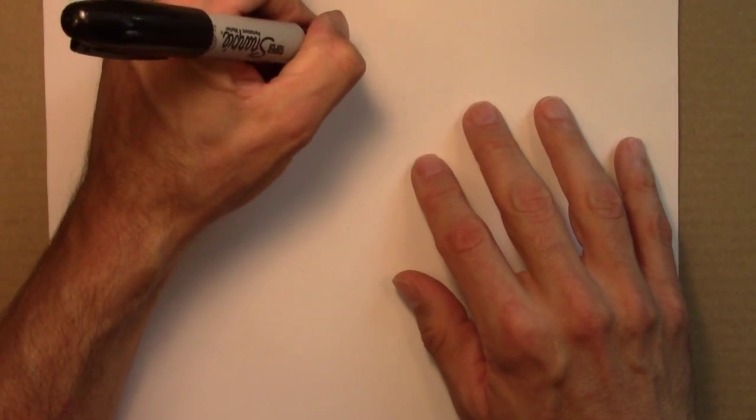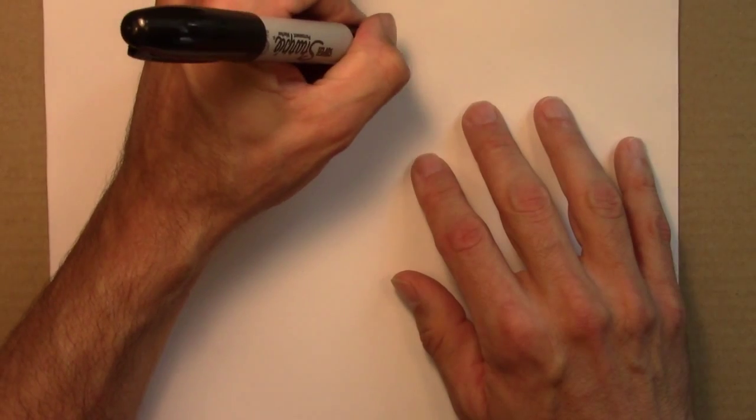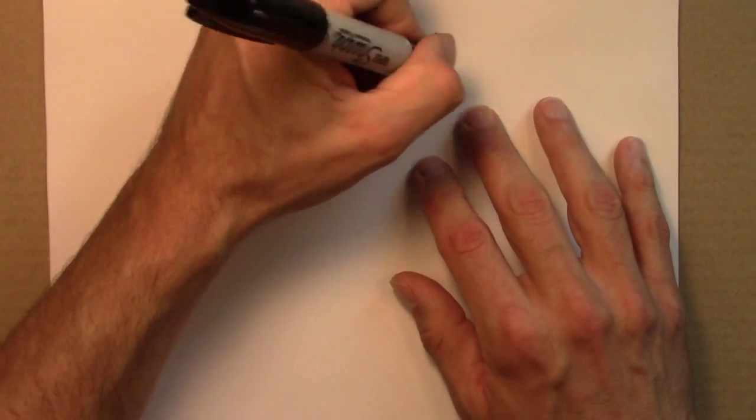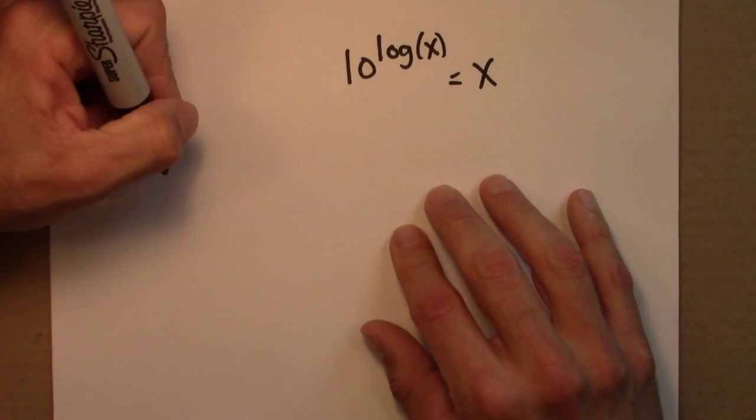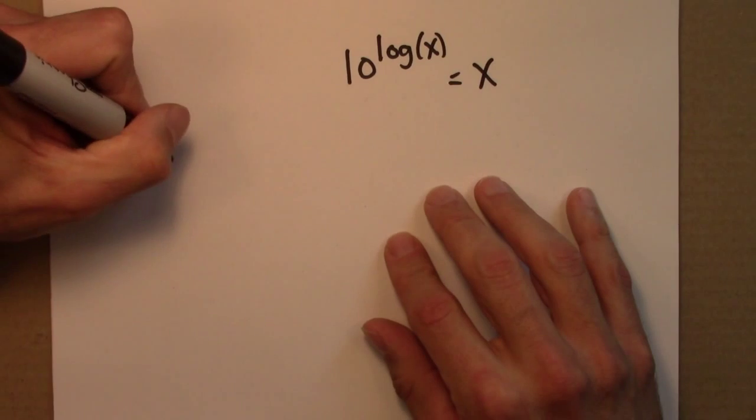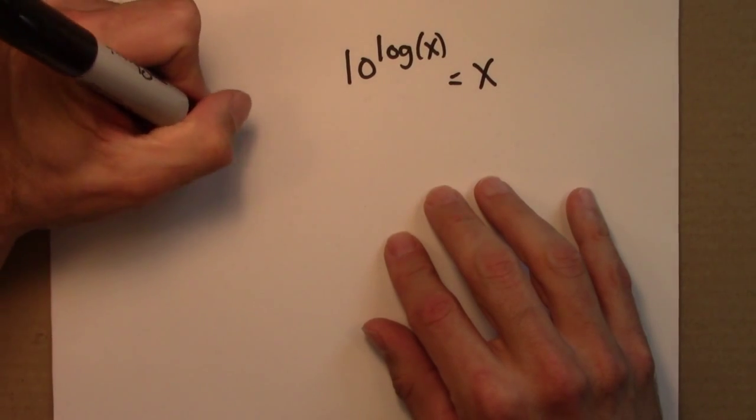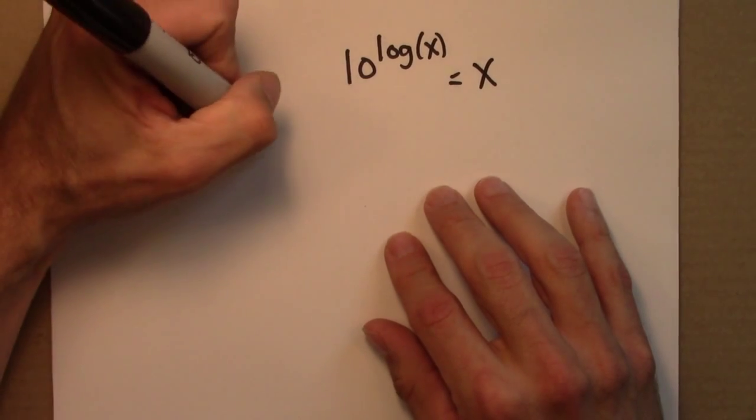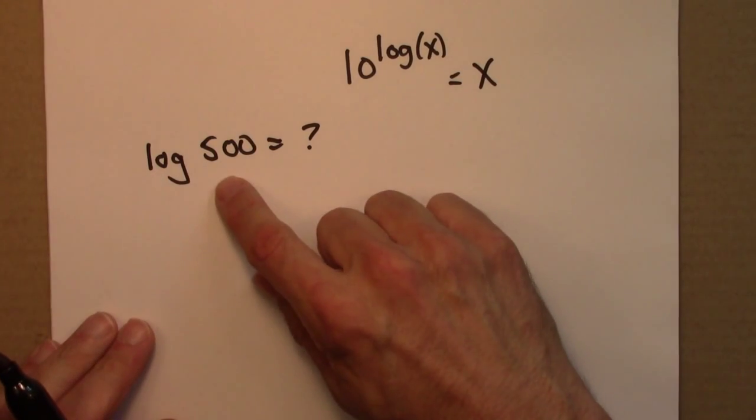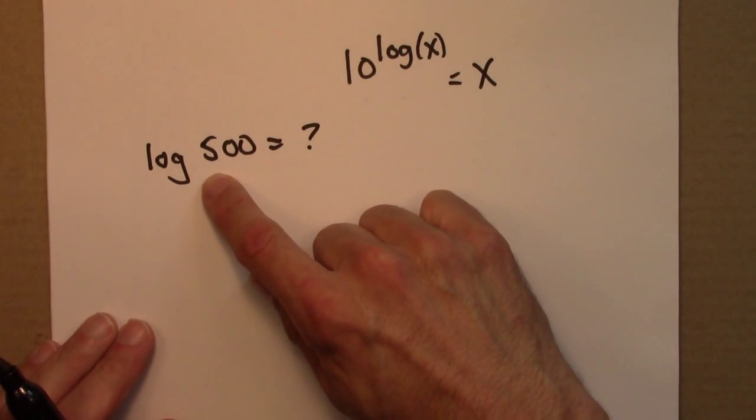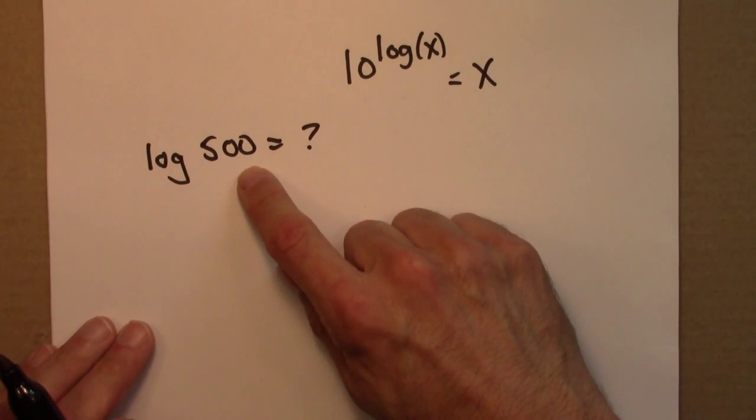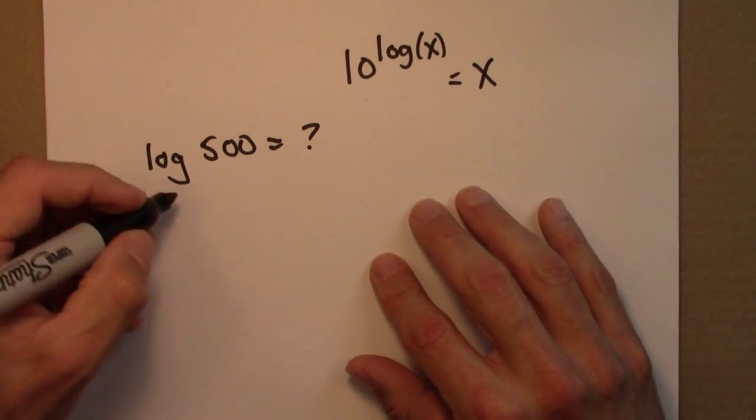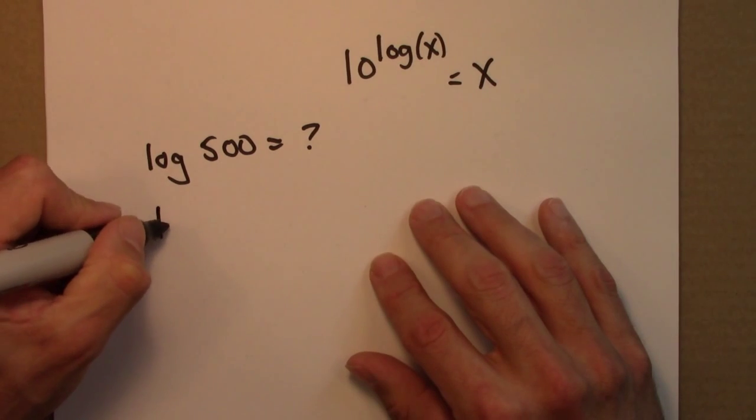And maybe I'll just write this again. That's the thing we remember for logs. So what about maybe log of 500. So I'm looking for some number which, if I put in the exponent, gives me 500. So here, without a calculator, I can't do that exactly. But I can figure out some stuff.